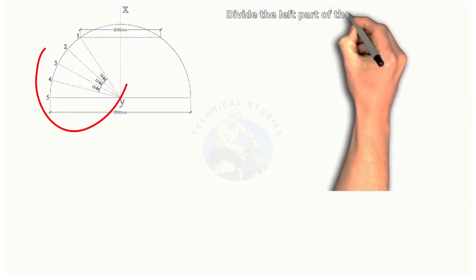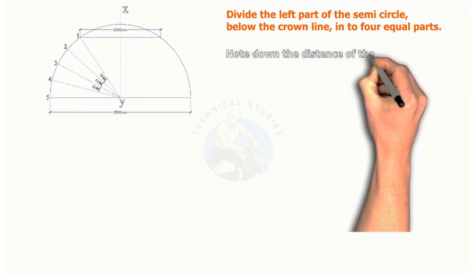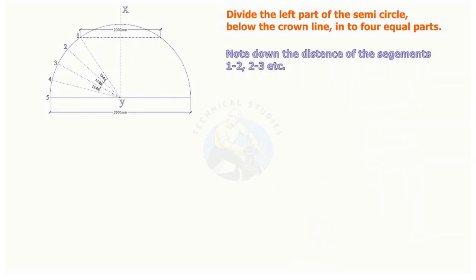Divide the petal side into four equal parts, as shown. Note down the arc lengths, one to two, two to three, etc.